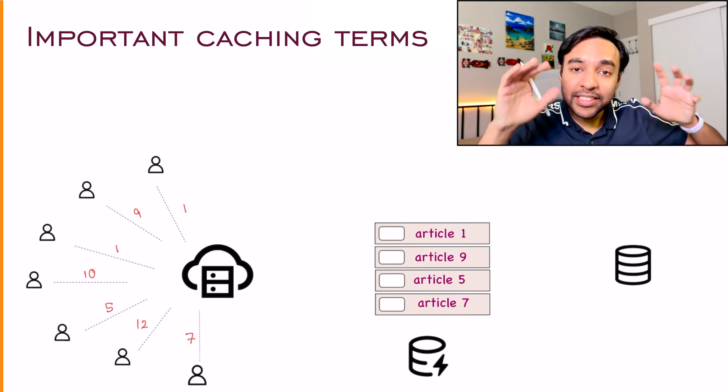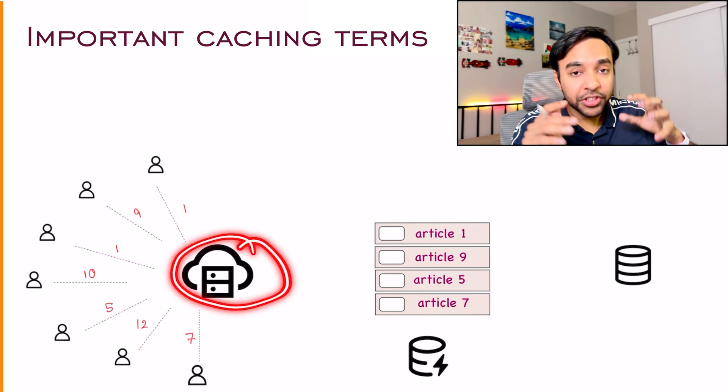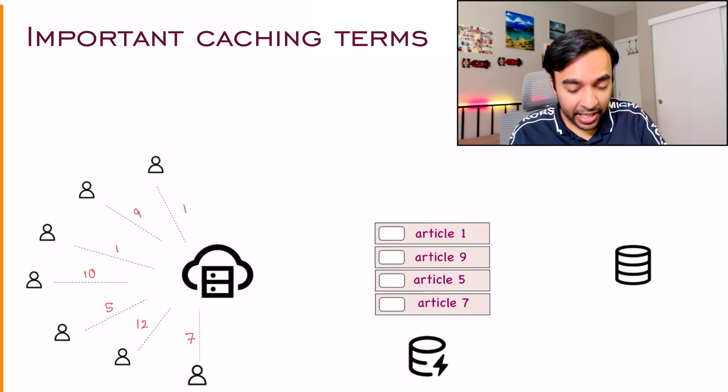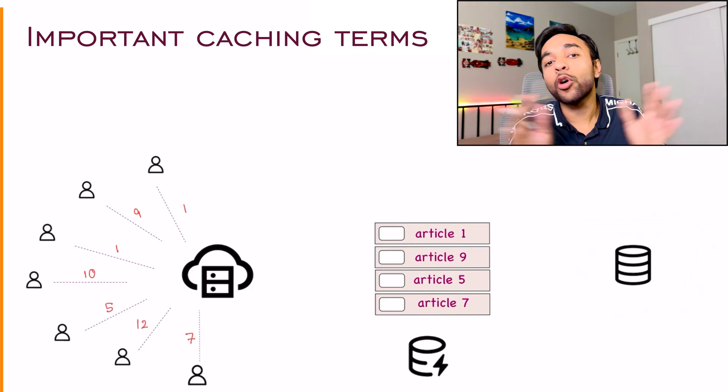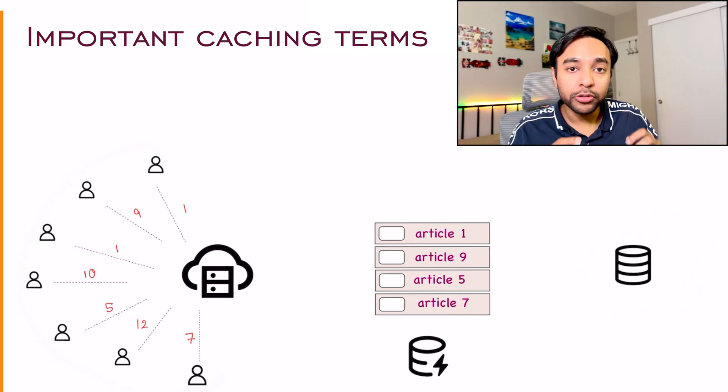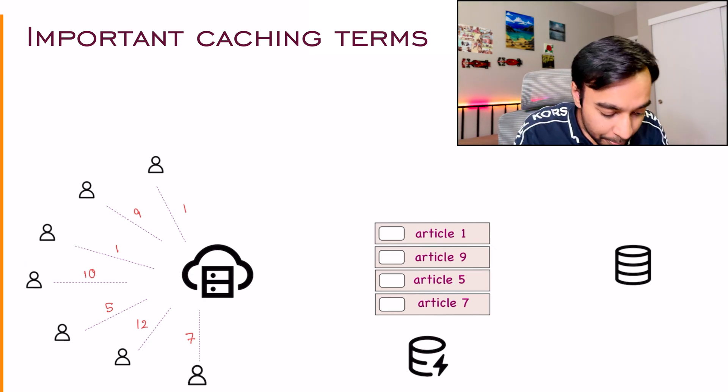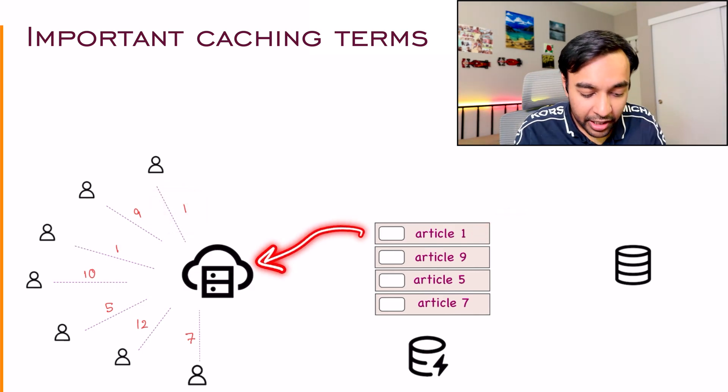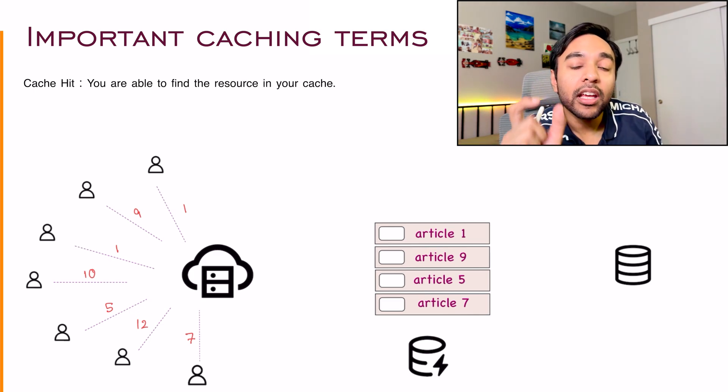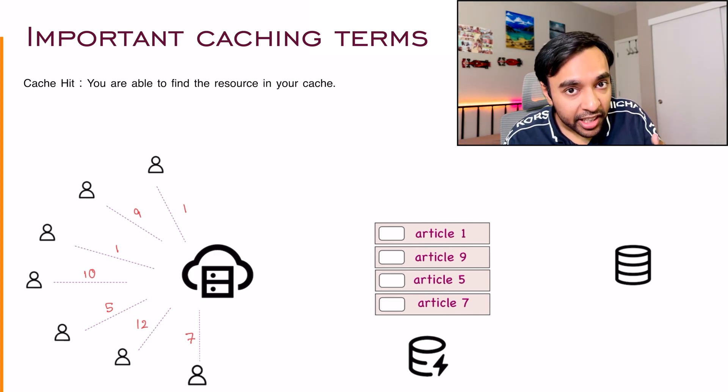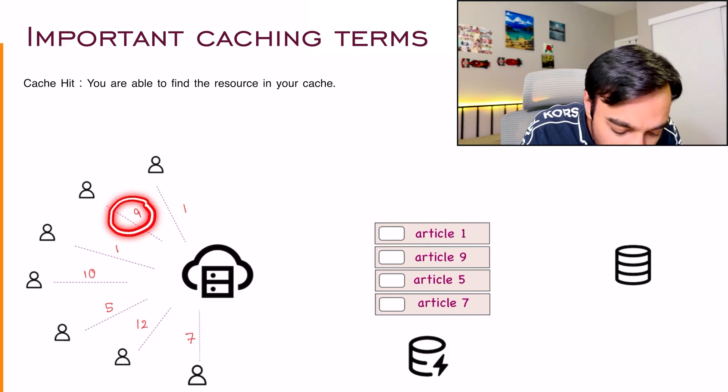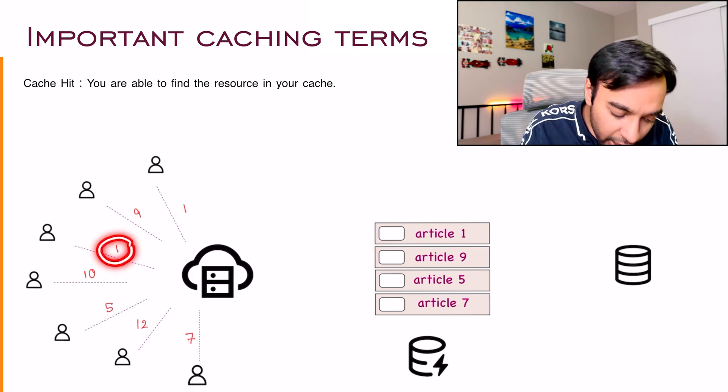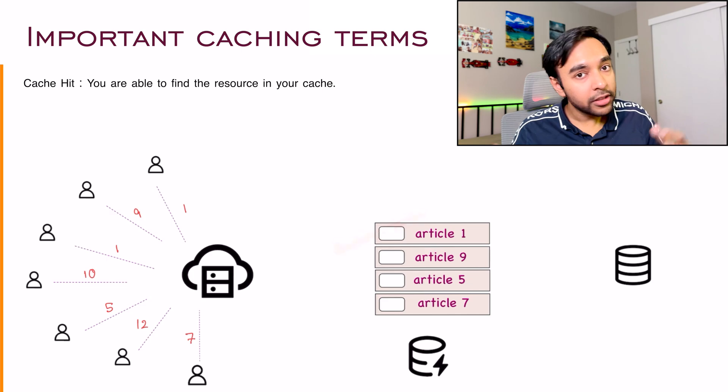Let us now understand some of the key terms that you must be aware about when you talk about caching. So let us say our system is set up something like this. I have my news server available over here. And let us say that in my cache, I have all these articles available. And then obviously I have my main database that has all the articles. Over here, I have a bunch of users that are requesting some of the articles. So user one is asking for article one. I will look in my cache and hey, I found it. So I will simply return it. If you are able to find anything in your cache, this is called as a cache hit. So once again, the second user asks for article nine, you are able to find it. So you simply return it. This is also a cache hit. The third user asks for article one, it is available. So once again, a cache hit.